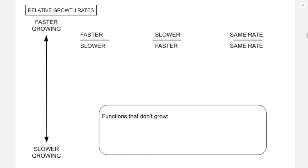Now I need to tell you about relative growth rates when comparing different classes of functions. One thing we never really addressed was what happens to a function like x divided by e to the x — power on one side, exponential on the other. The same principles from algebra still apply: a fraction whose numerator grows faster than its denominator approaches infinity; a fraction whose denominator grows faster approaches zero; and if they grow at the same rate, the fraction tends towards the ratio of leading coefficients.